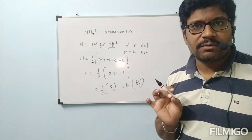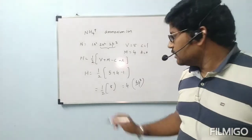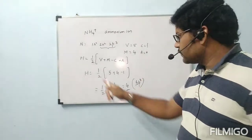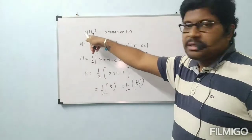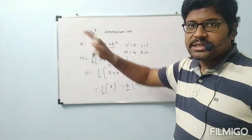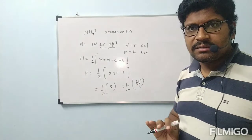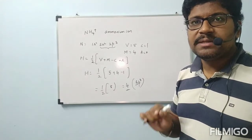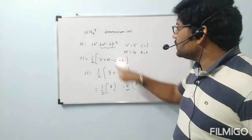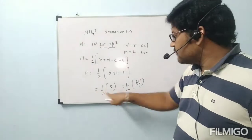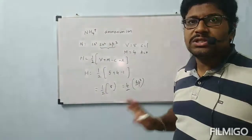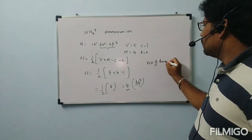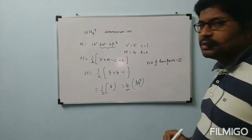To find the number of lone pairs: the H value is 4 and there are 4 hydrogen atoms bonded to nitrogen. 4 minus 4 equals 0. So the number of lone pairs is 0.